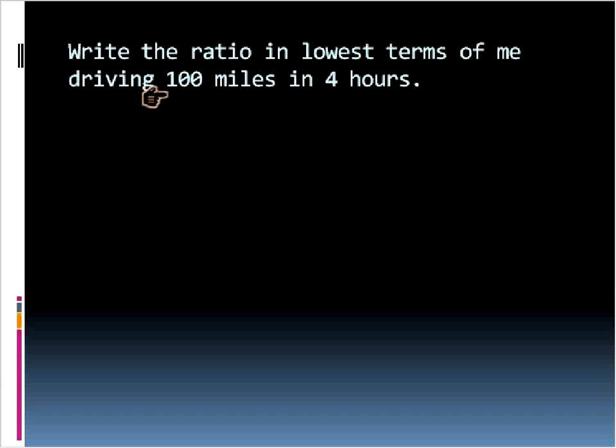Here it says, write the ratio in lowest terms of me driving 100 miles in four hours. The first thing that I'm going to do is I'll set up my ratio of miles to hours, right? Miles, how many miles for each hour? And I'll just fill in the blanks. You'll notice I'm using the colons this time instead of the fraction. You can solve ratios whichever way you feel comfortable. I have 100 miles in four hours. I'm going to try and reduce that down to lowest terms. And I'll do that by dividing. I'll divide by the greatest common factor. In this case, that's four. I'll divide each term by four, and that gives me the final ratio of 25 to 1.